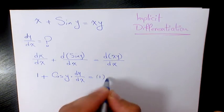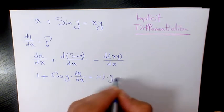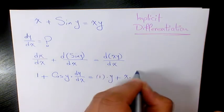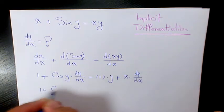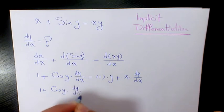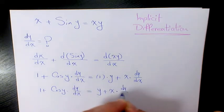So it's 1 times y plus x times the derivative of y with respect to x. This gives us 1 plus cosine y dy/dx equals y plus x dy/dx.